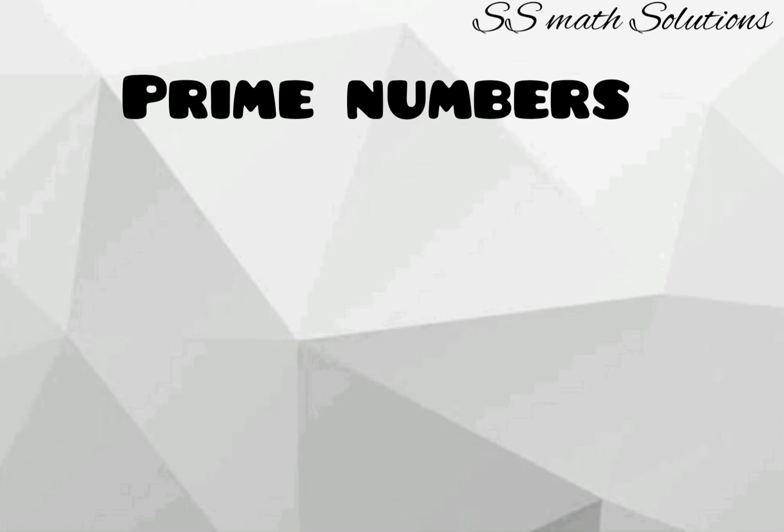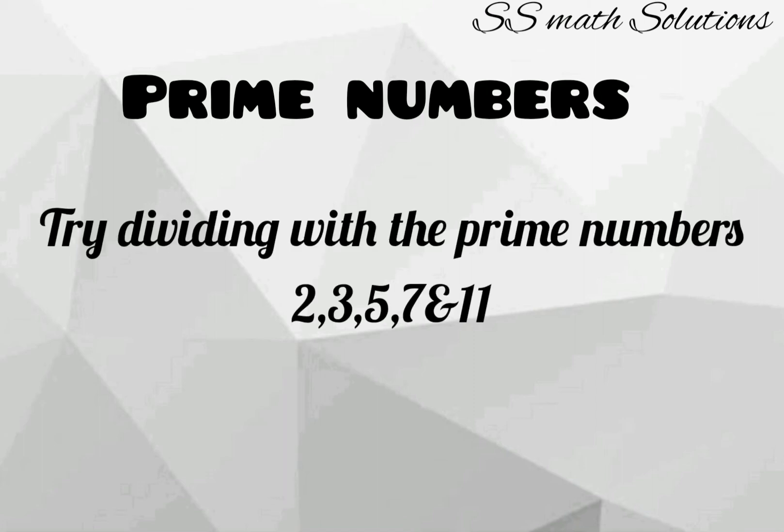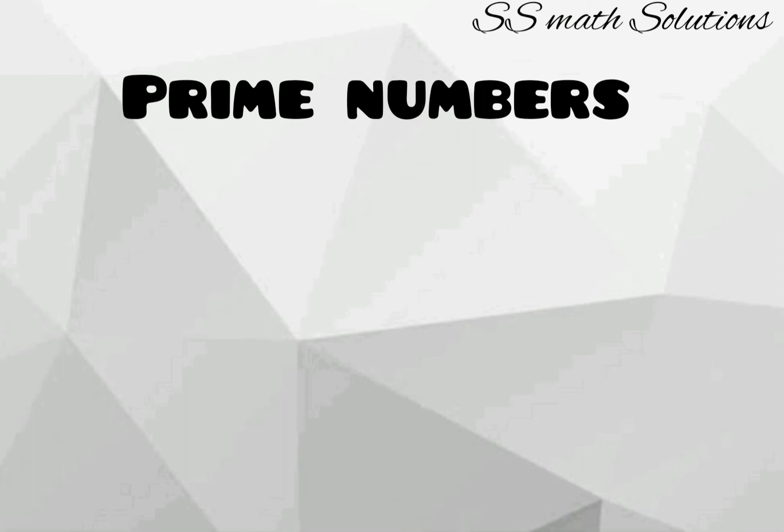Now, how to find prime numbers. To find whether a number is prime, try dividing it with the prime numbers 2, 3, 5, 7, and 11. If the number is exactly divisible by any of these numbers, it is not a prime number — otherwise it is a prime.